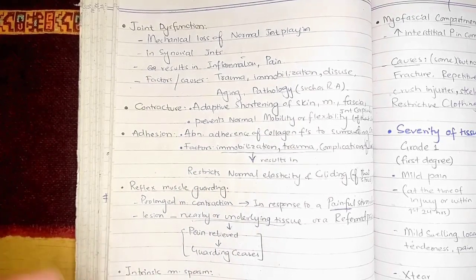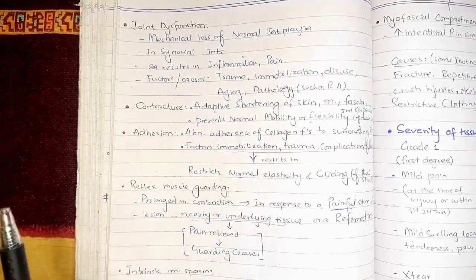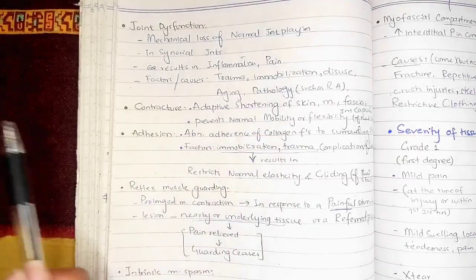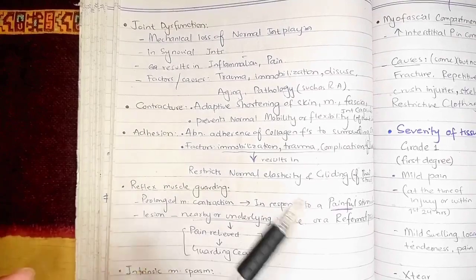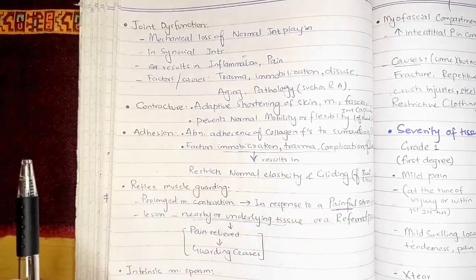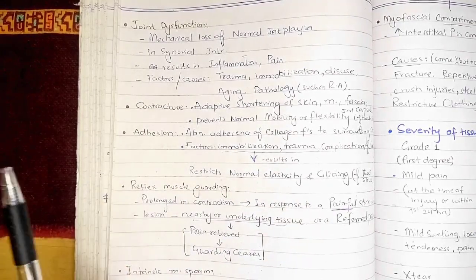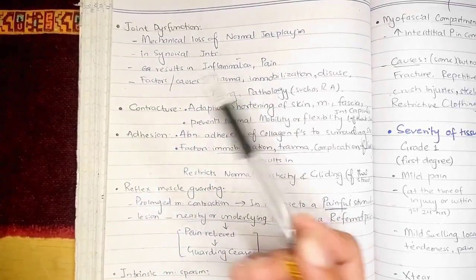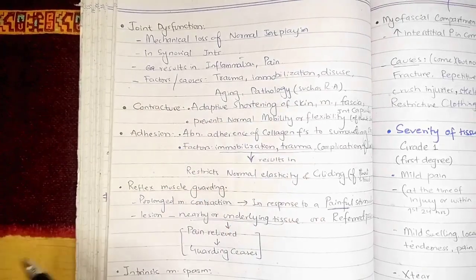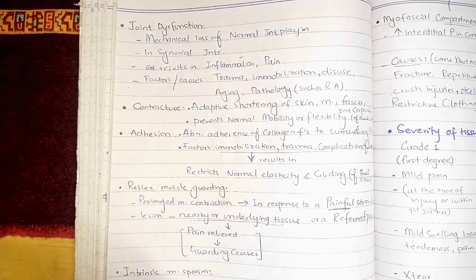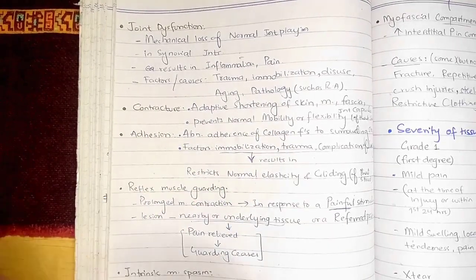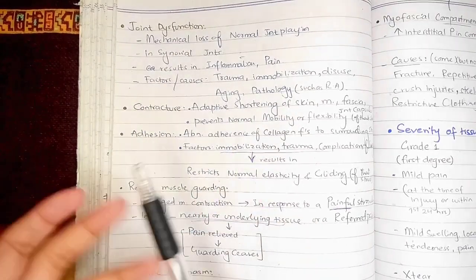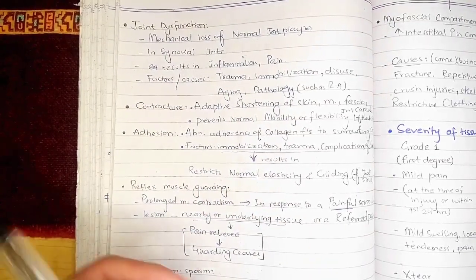In joint dysfunction, there is a mechanical loss of normal joint play, and it occurs in synovial joints. The factors that can result in joint dysfunction include trauma, immobilization, disuse, aging, or any kind of pathology — for example, rheumatoid arthritis. These joint dysfunctions can result in inflammation and pain.